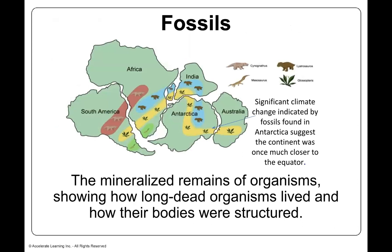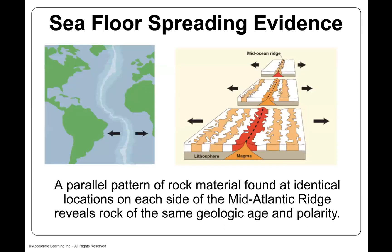The mineralized remains of organisms show how long-dead organisms lived and how their bodies were structured — in other words, fossils. Significant climate change indicated by fossils found in Antarctica suggests the continents were once much closer to the equator. Wegener's idea was that it all fit together like a big jigsaw puzzle. Another key piece of evidence was seafloor spreading — a parallel pattern of rock material found at identical locations on each side of the mid-Atlantic ridge, revealing rock of the same geological age and polarity.